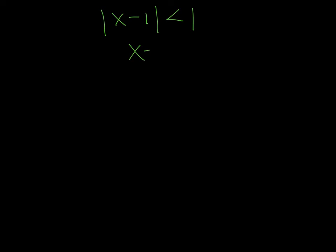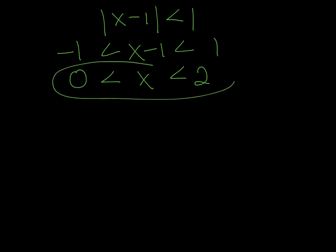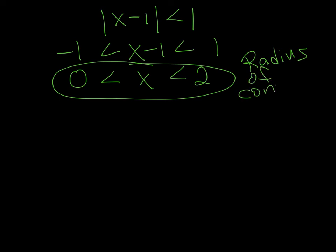So x minus 1 must be between negative 1 and 1. Adding 1 to all three parts of that inequality, x is between 0 and 2. That's our interval, almost. From here we can see that the radius of convergence is 1. But we still need to check the endpoints.